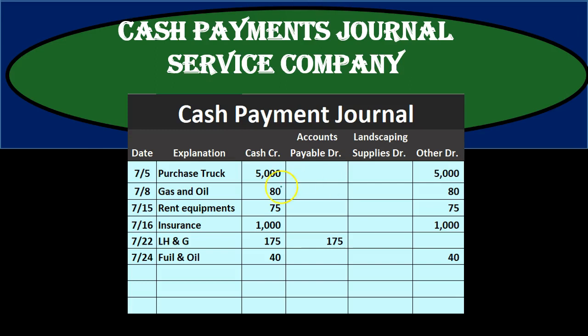We're going to look at a lot of different transactions because cash can be involved in many different areas. The ones that are not normal are typically more difficult in test-taking situations and in practice. We'll look at examples where we don't have a dedicated column and have to put items into the 'other' category, then deal with breaking those out when recording to our accounting system.